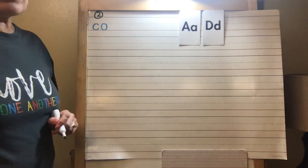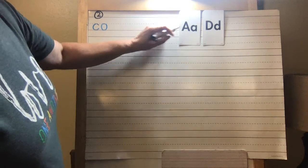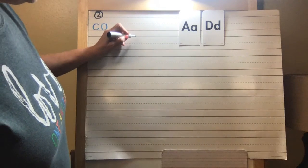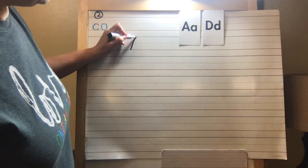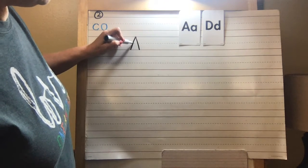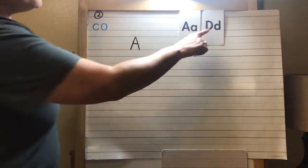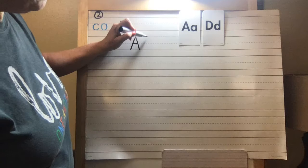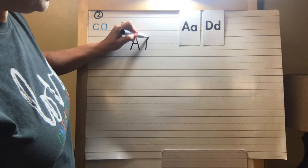So we're going to first start with the capital A. The capital A is a big line down, big line down, little line across, and then a big curve.